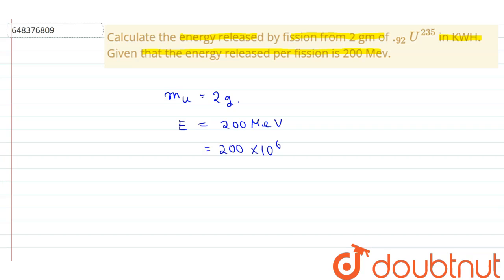10 power 6 into 1.6 into 10 power minus 19 joules. Now number of atoms in 2 gram uranium is given by n equals to 2 into 6.023 into 10 power 235. So here 235 is the total mass of uranium. So number of atoms in 2 gram uranium n equals to